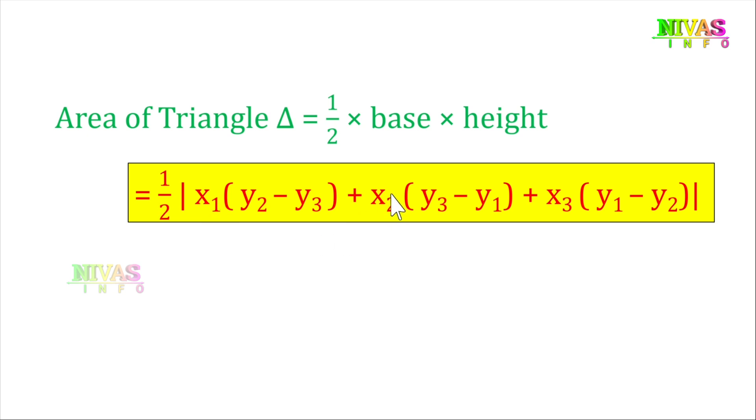The formula is one by two x1 into y2 minus y3 plus x2 into y3 minus y1 plus x3 into y1 minus y2. You can observe the pattern: with x coordinates x1, x2, x3 in order, we have y2 minus y3 for first, y3 minus y1 for second, and y1 minus y2 for third. This is the best trick to remember this formula.